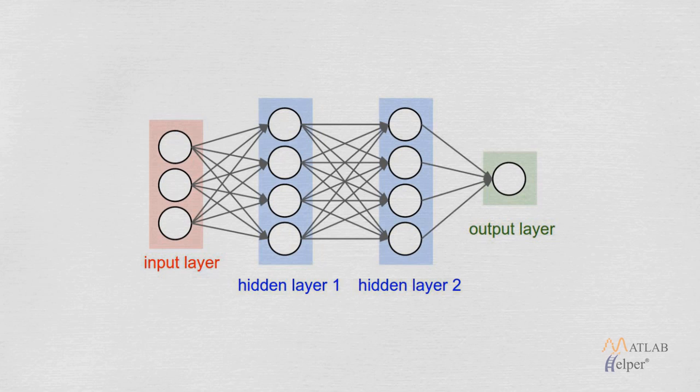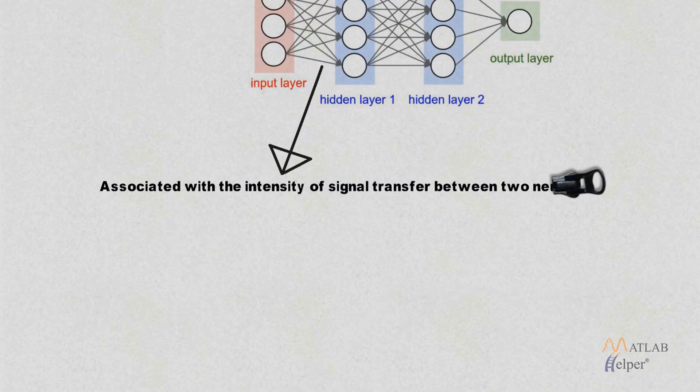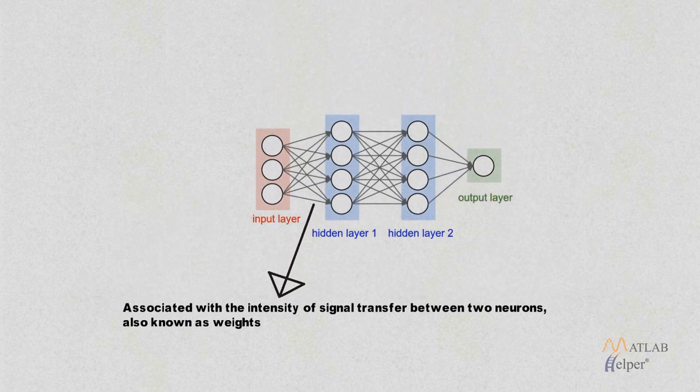The connection between two neurons is associated with the intensity of signal transfer. This is also known as weight.